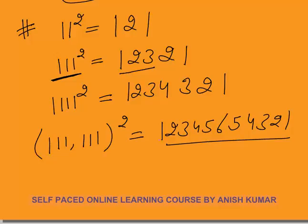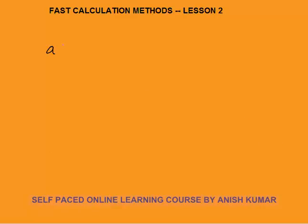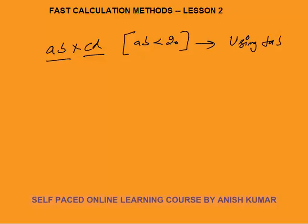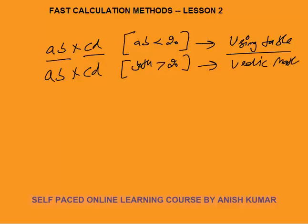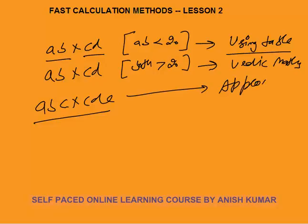To summarize this lesson: we covered AB×CD two-digit multiplication when one number is less than 20 (using tables); AB×CD when both numbers are greater than 20 (using Vedic maths); approximating 3-digit numbers to 2-digit for competitive exams; squares of numbers ending in 5; and squares of repunit numbers. You don't need any other methods — these cover all calculations needed for aptitude exams. Thank you.